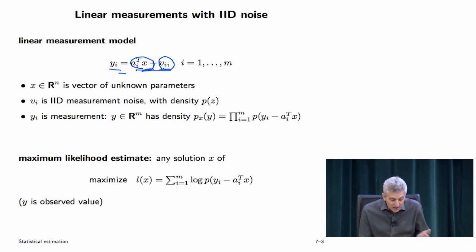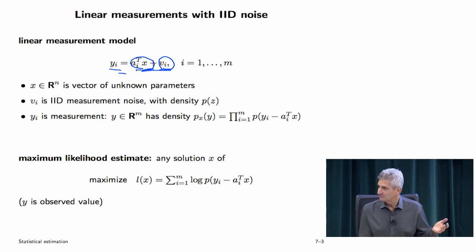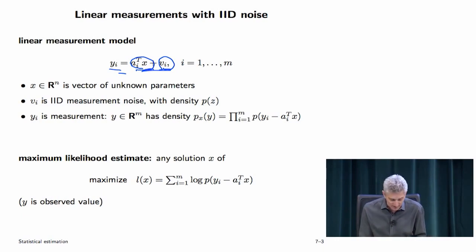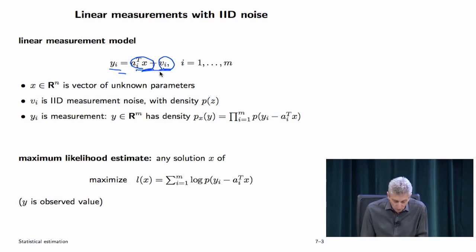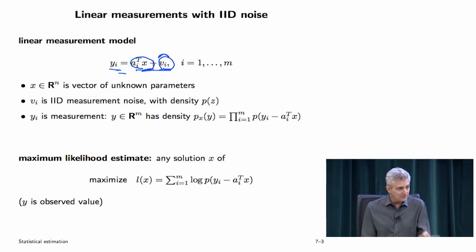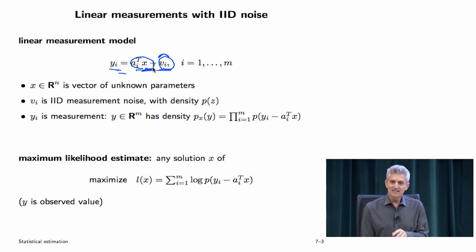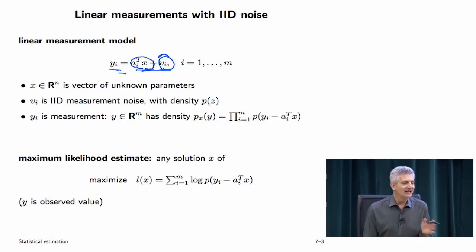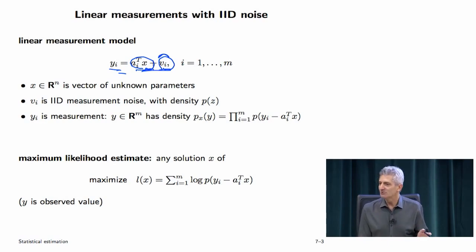A statistician would look at that and say: x is a parameter, y comes from a distribution because v_i is a random variable. They'd say y comes from a distribution, and which distribution depends on what x is — so x is a parameter that describes which distribution generated y. At the end of the day you do the same things, but it's interesting to think about the different views of what y = Ax + v can mean.